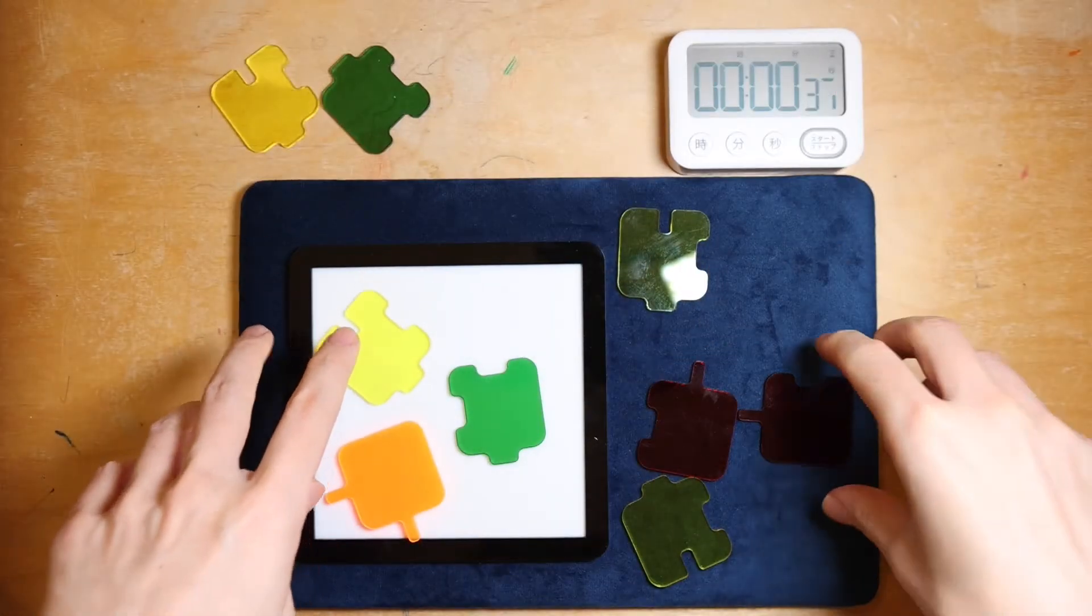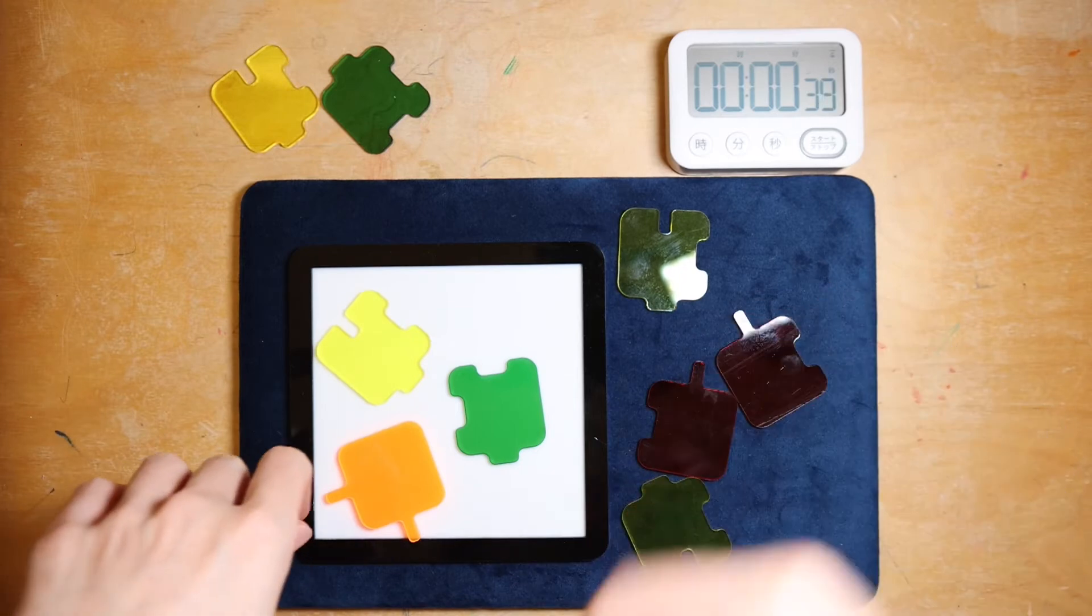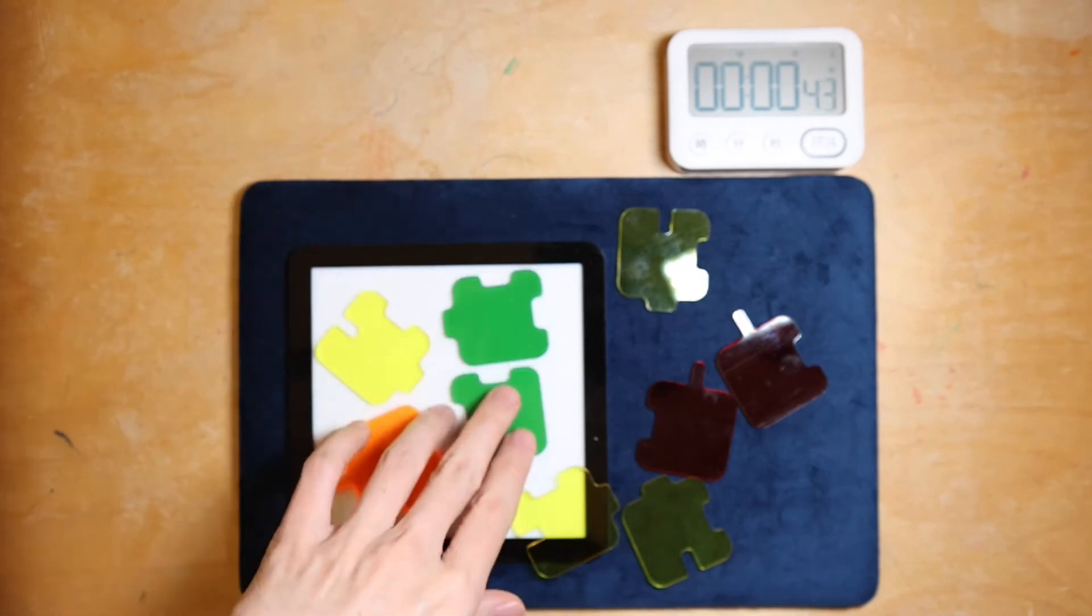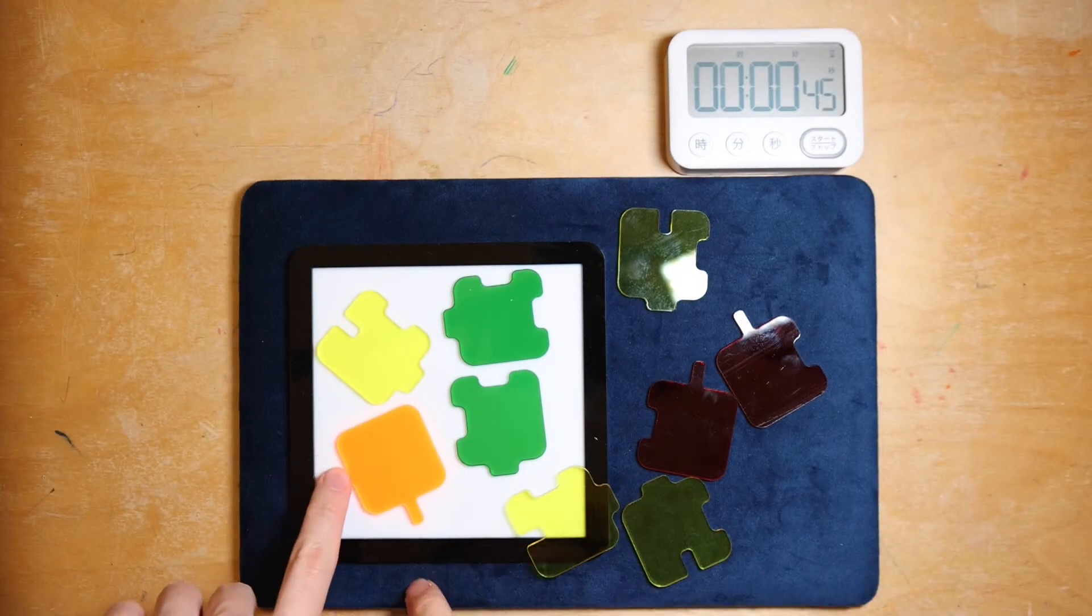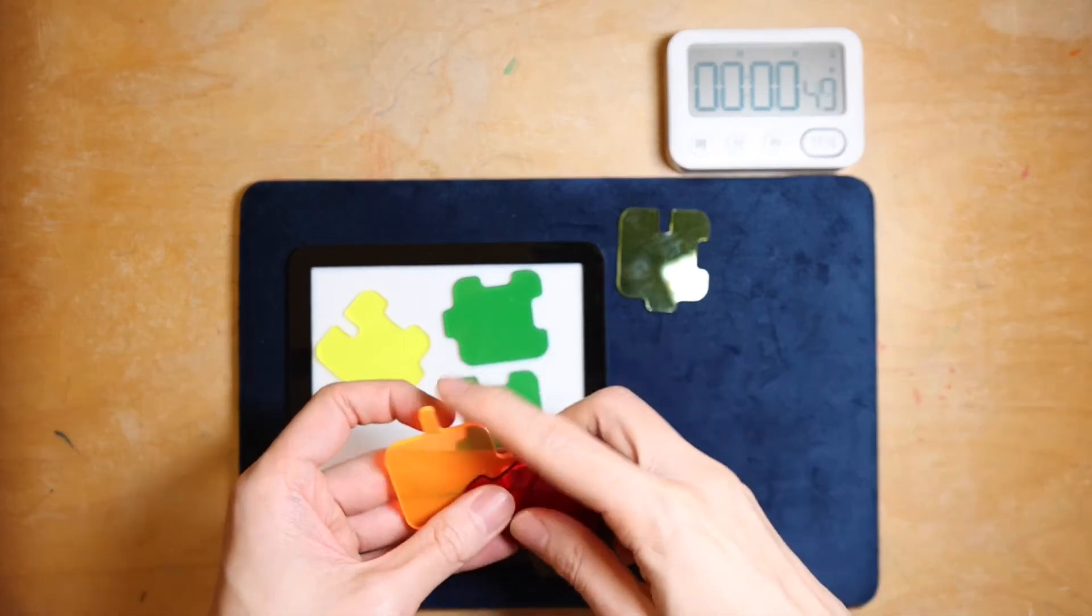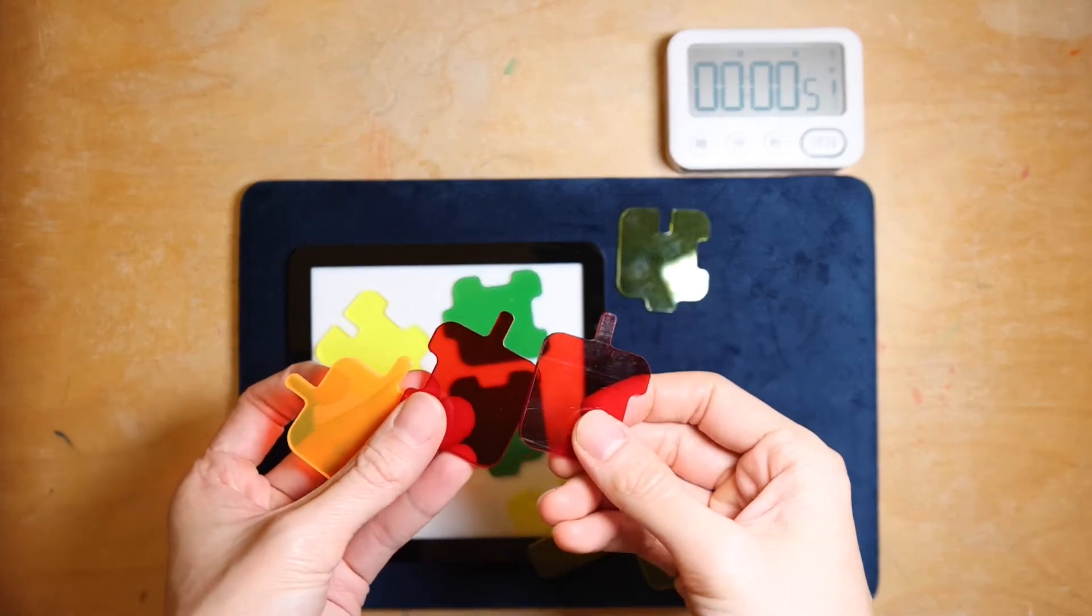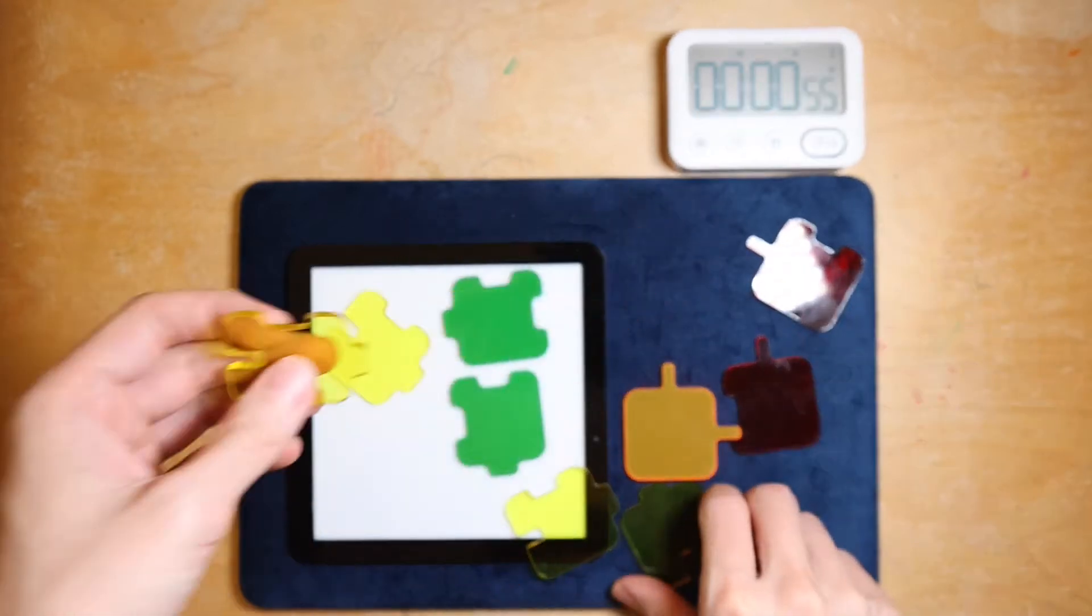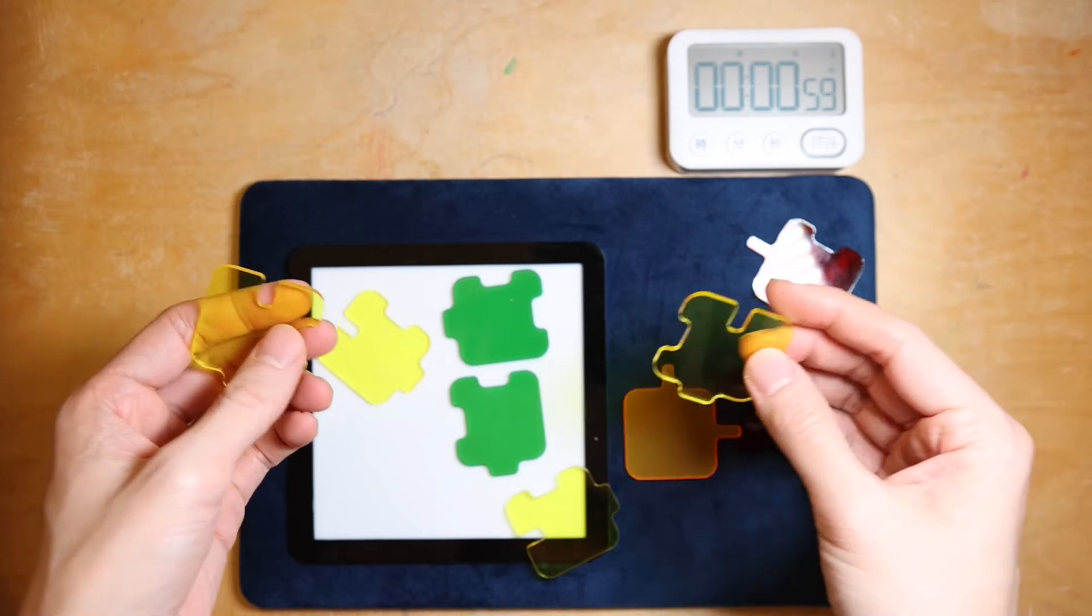Now this time I will try to be a little bit more strategic and count the number of thin protrusions. Let's see what we've got here. The orange piece has two long protrusions, and the red piece has three and four. So in total there are four thin protrusions.